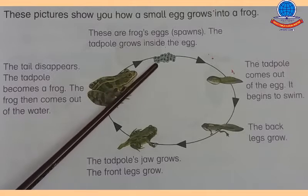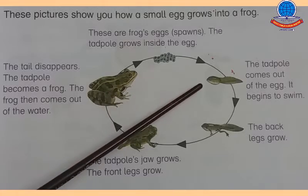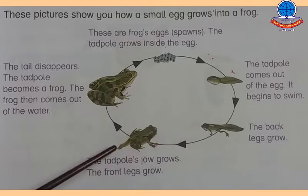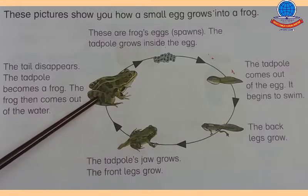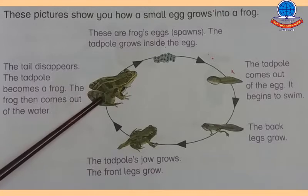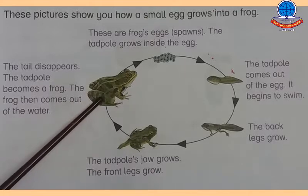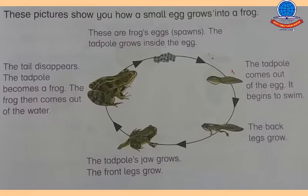To summarize the frog's life cycle: sabse pehle eggs, then tadpole, then back legs grow, then jaws and front legs growing, and after that a fully grown adult frog. Yeh frog ka life cycle tha jismein aapne dekha ki frog different stages ke through apna life cycle complete kar raha hai.